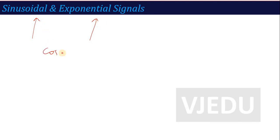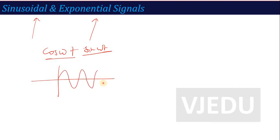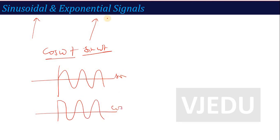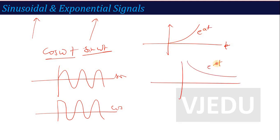For sinusoidal signals, we have cos(ωt) and sin(ωt). The sine wave starts from zero since sin(0)=0, while the cosine wave starts from 1 since cos(0)=1. For exponential signals, in the time domain we have an increasing exponential. A decreasing exponential uses a negative exponent — e^(-t) or e^(-at) — where the value of the signal decreases over time.